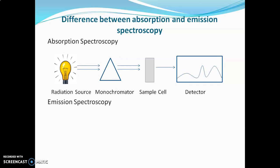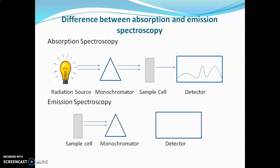In emission spectroscopy, the difference from absorption spectroscopy is that the sample itself emits the radiations. The sample itself emits radiation which passes through the monochromator, and finally we get the graph of emission — the emission spectra. This is how absorption and emission spectroscopy work. Here I will end the second part, which is the introduction of spectroscopy.